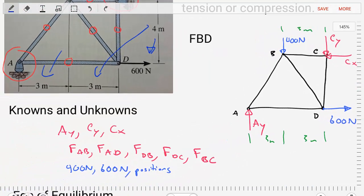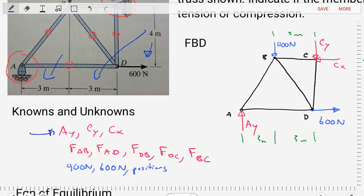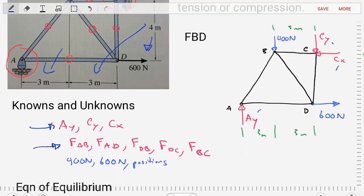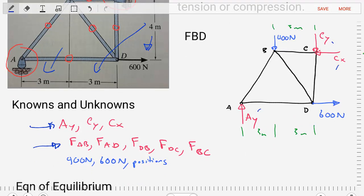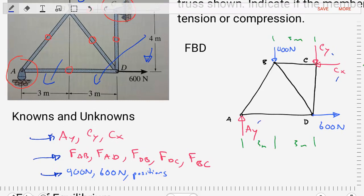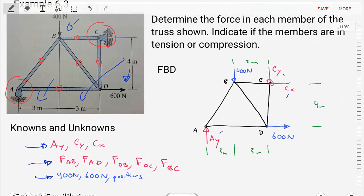Let's put together our knowns and unknowns. The first set of unknowns are the reactions from our free body diagram: AY, CX, and CY. The second batch of unknowns are the forces transmitted in each of the five members: FAB, FAD, FDB, FDC, and FBC. Our knowns are the external forces and dimensional information. Overall we have many unknowns, but since it's a 2D problem we have three equations and three unknowns in the free body diagram to start with.